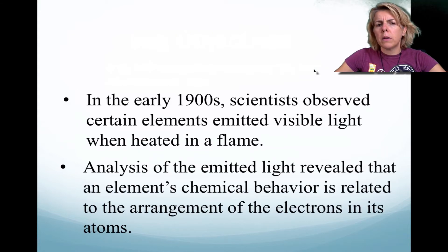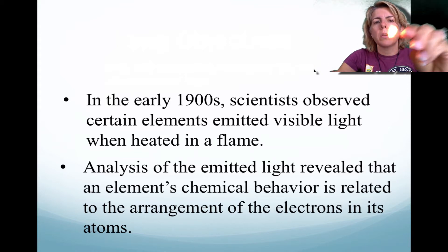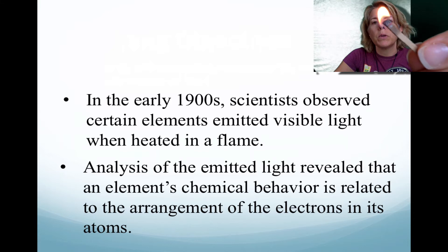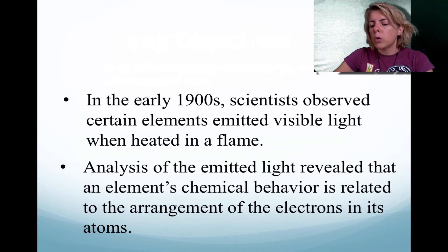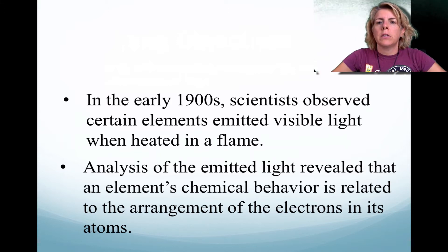Okay, so scientists in the 1900s, they observed that certain elements emitted a visible light. So an example here is a match. When you strike a match, you're obviously interacting elements with combustion and seeing visible light. Now, they actually took that light, and they tried to analyze it, and they also tried to relate it to the behavior that they saw with those elements. Now we're going to look at the behavior of electrons within those elements.